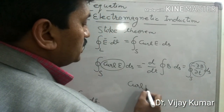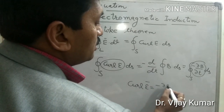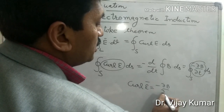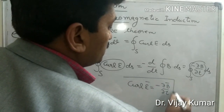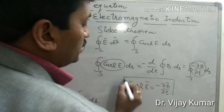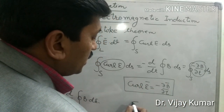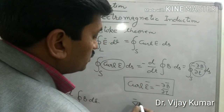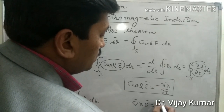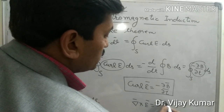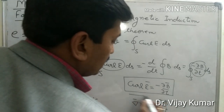Curl E equals minus ∂B/∂t — this is the derivation of Maxwell's third equation. We can also write this as ∇ × E = −∂B/∂t.